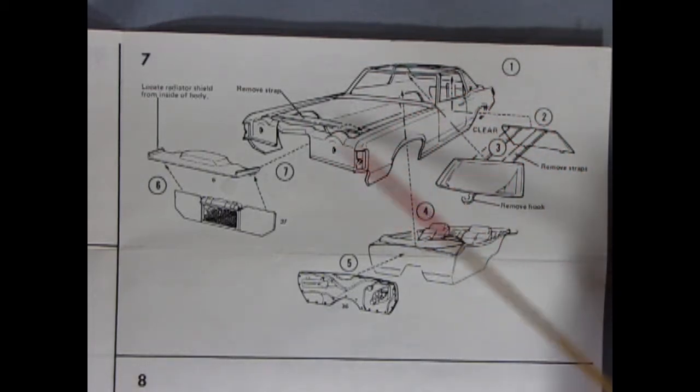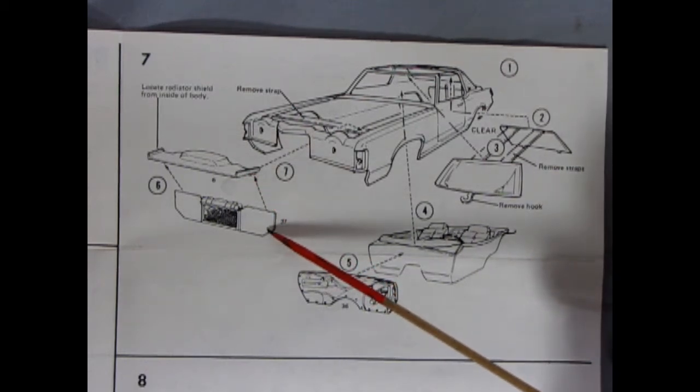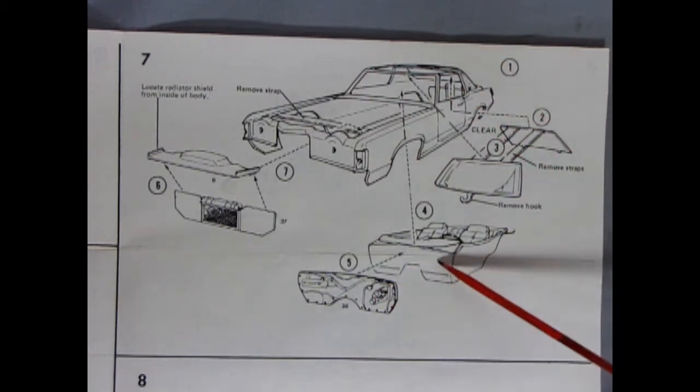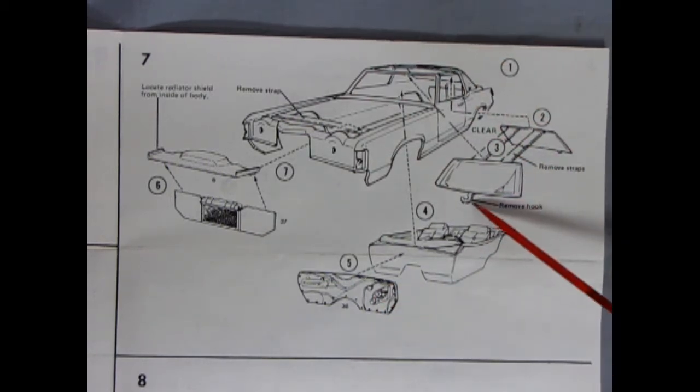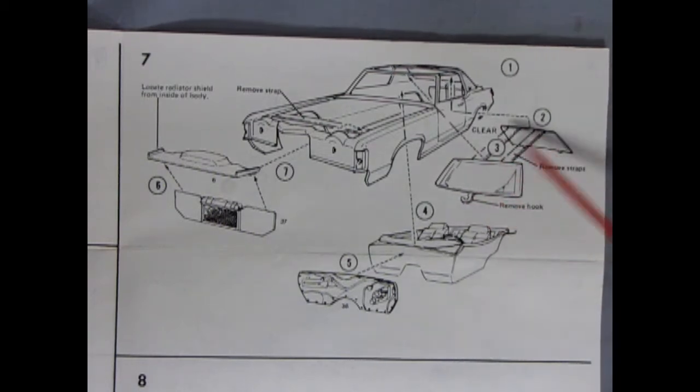So I guess the Sweathogs and the Fonz were sort of having the same dream as their envisionment of a dream car because they were both Pontiacs. Anyway here's our body and we've got a radiator shield and our radiator wall as well as our radiator. Then we've got our firewall gluing onto the interior. We have to remove our hook and remove the straps to glue our windshield and back glass into place.